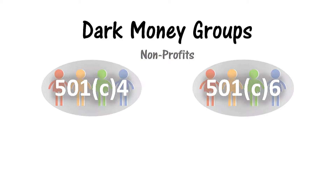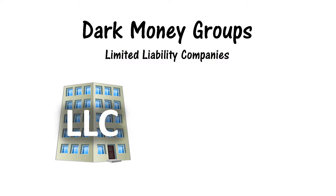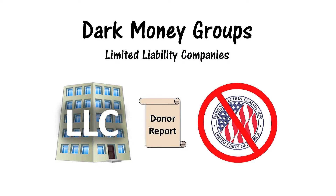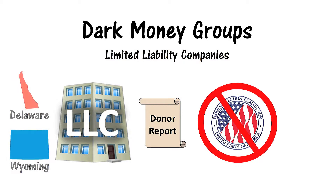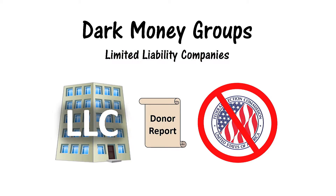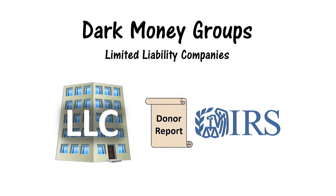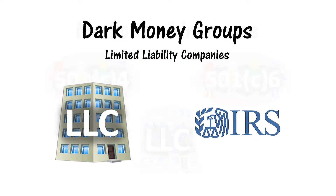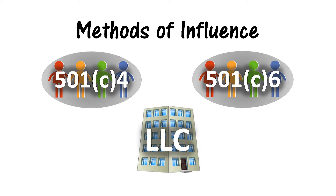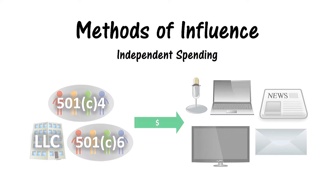In addition to nonprofit groups, a less typical but possible avenue for dark money is through entities called limited liability companies, or LLCs. These can also engage in political activity and hide the names of individuals and organizations who contribute. LLCs in some states, such as Delaware and Wyoming, are even formed anonymously. Like the 501(c) groups, LLCs are regulated by the IRS.